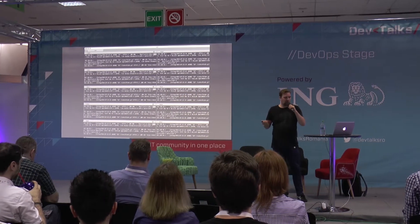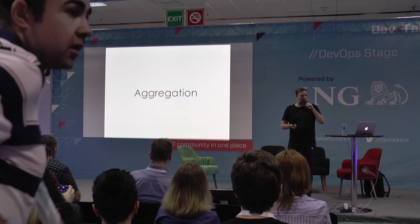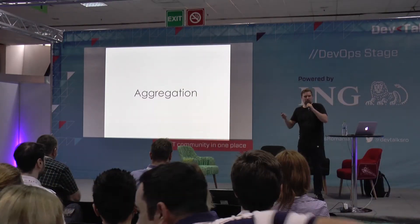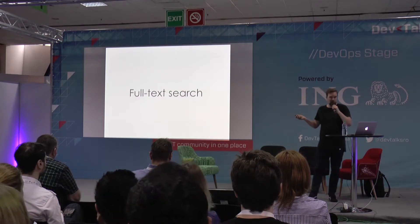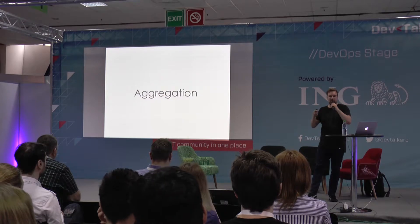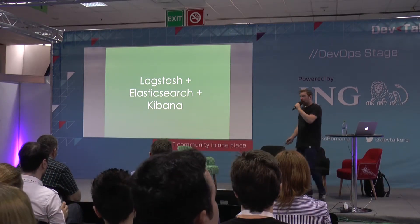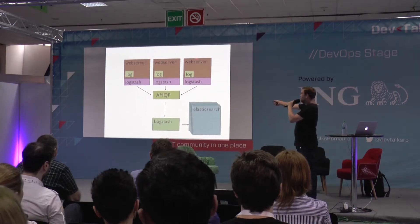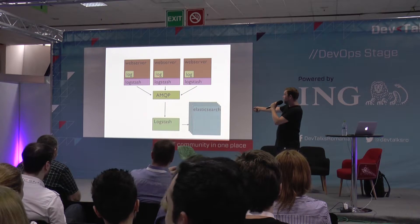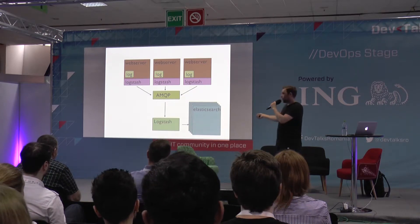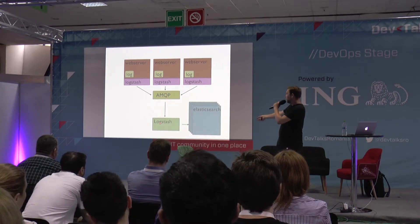So it makes sense to put the logs in a central place and have something to make them full-text searchable and easy to aggregate. What we are using is the so-called ELK stack — Elasticsearch, Logstash, and Kibana. We have all our servers with all our applications producing log files. Then we have a small Logstash daemon running on these servers that just tails these logs, parses them — which is just JSON parsing — and puts them into a queue. Then we have another Logstash instance pulling from that queue and saving them into Elasticsearch.